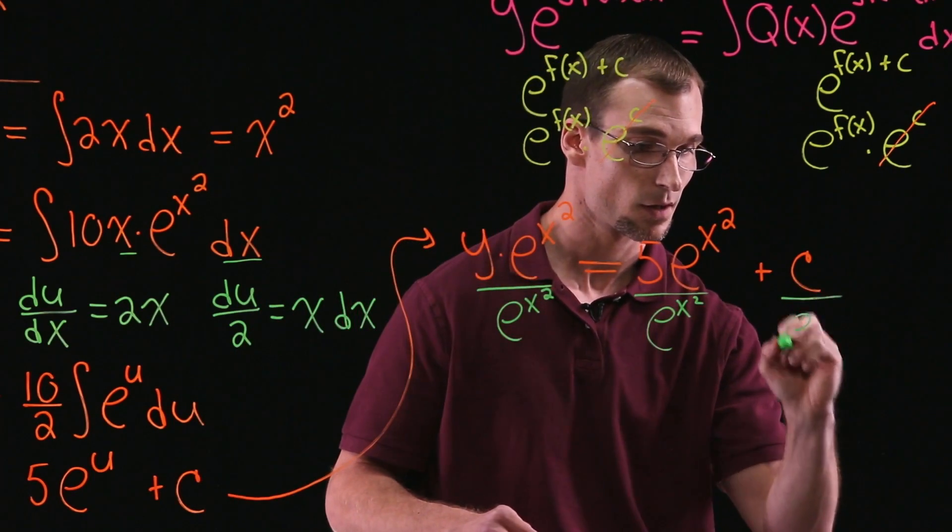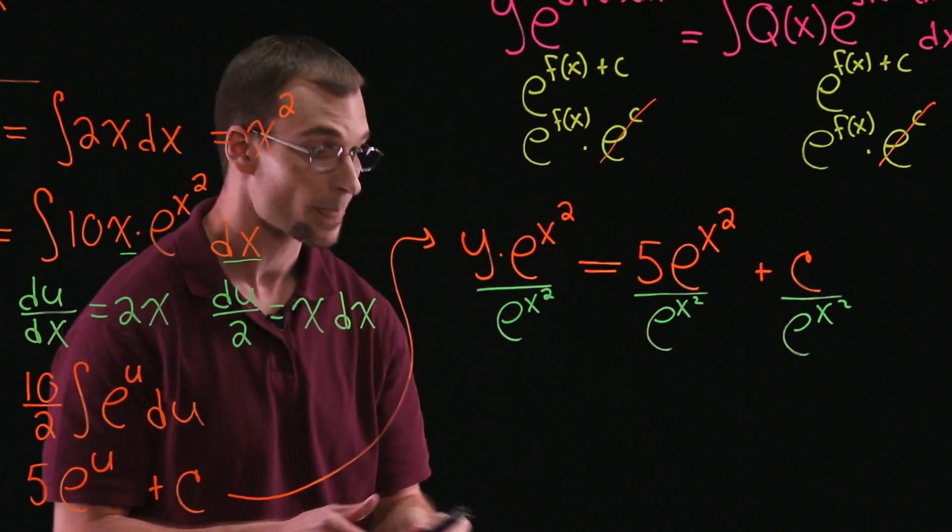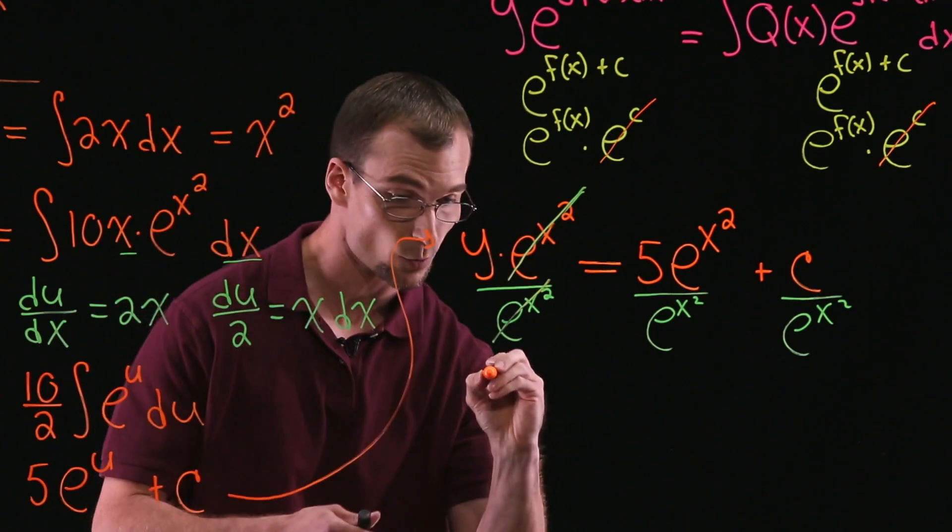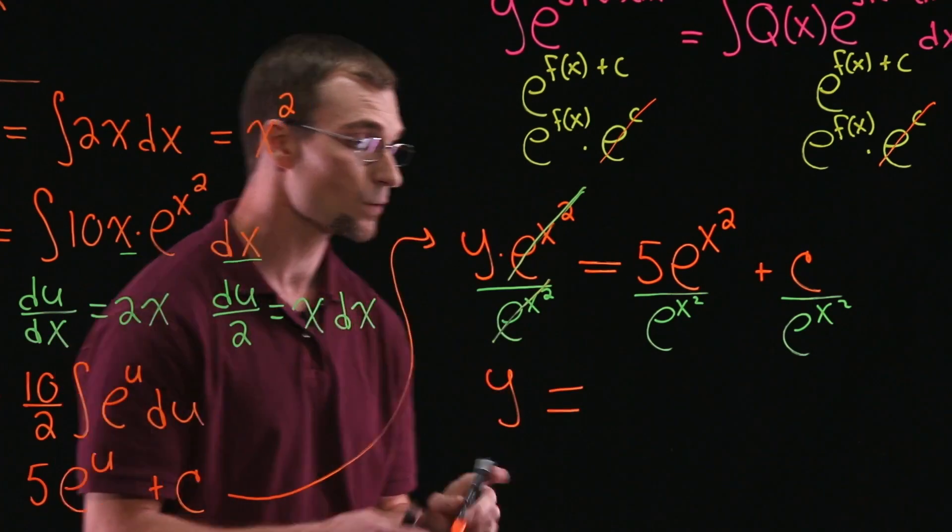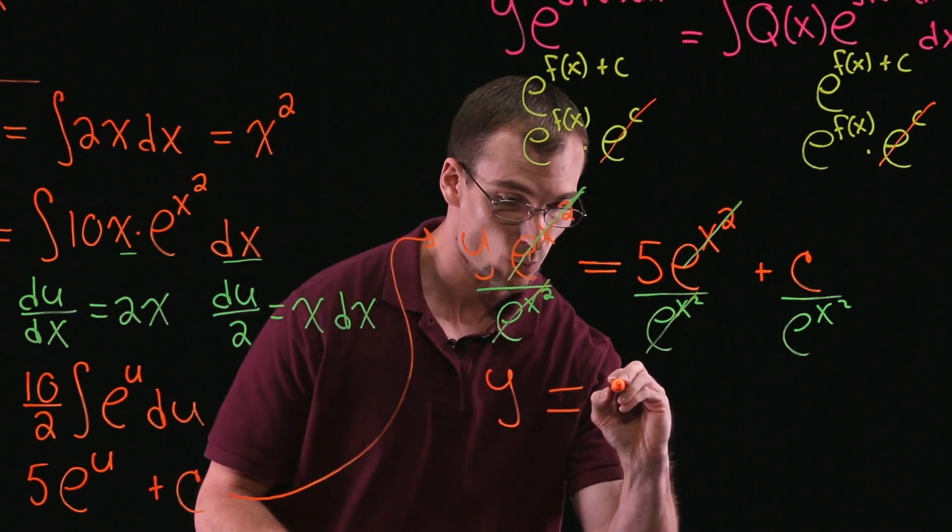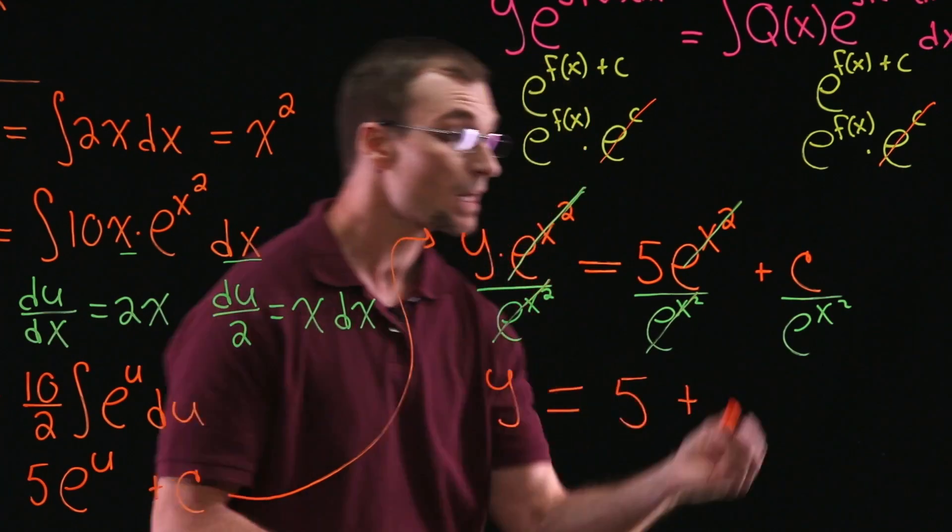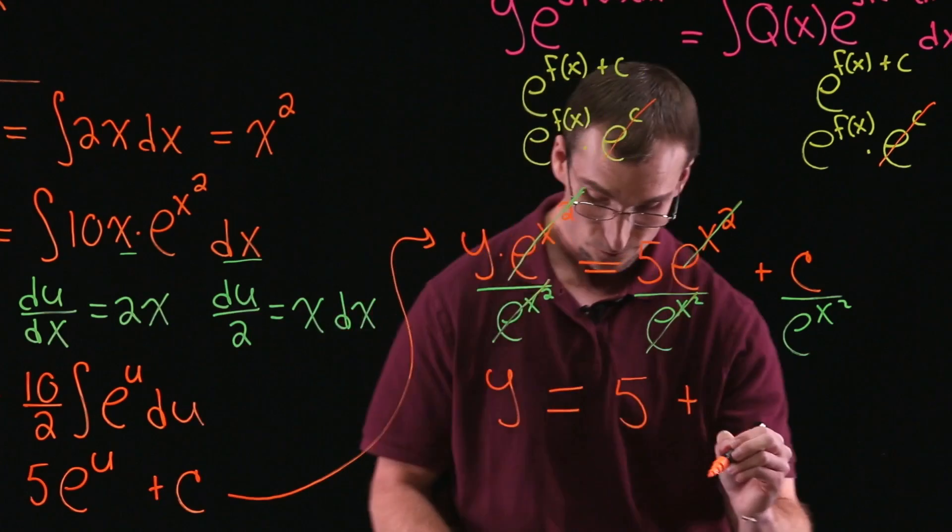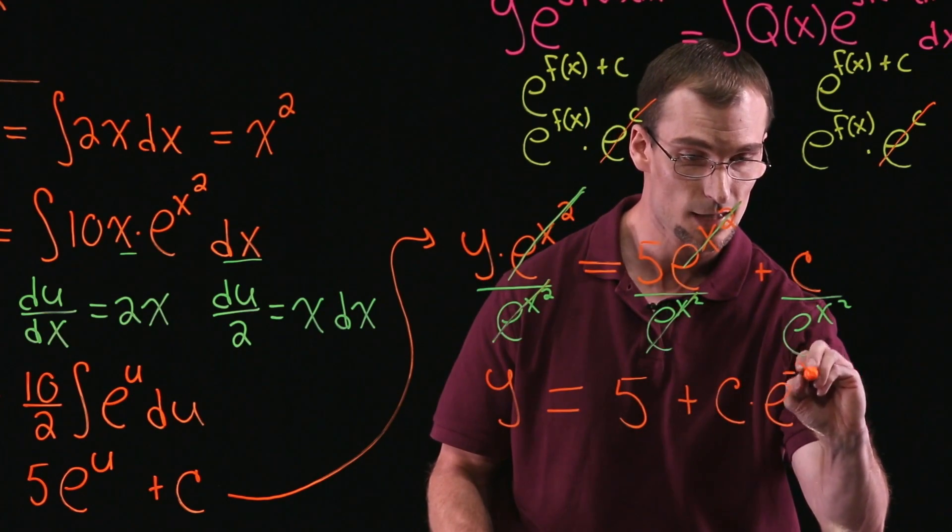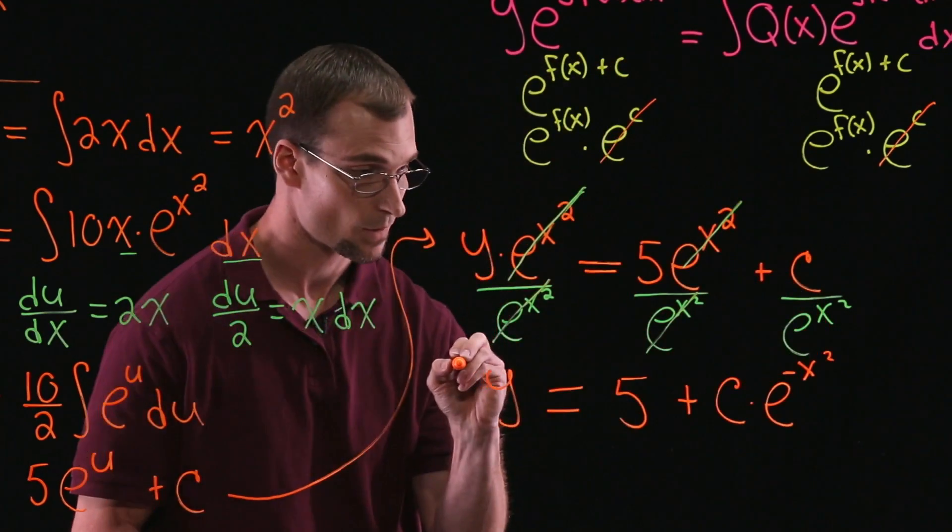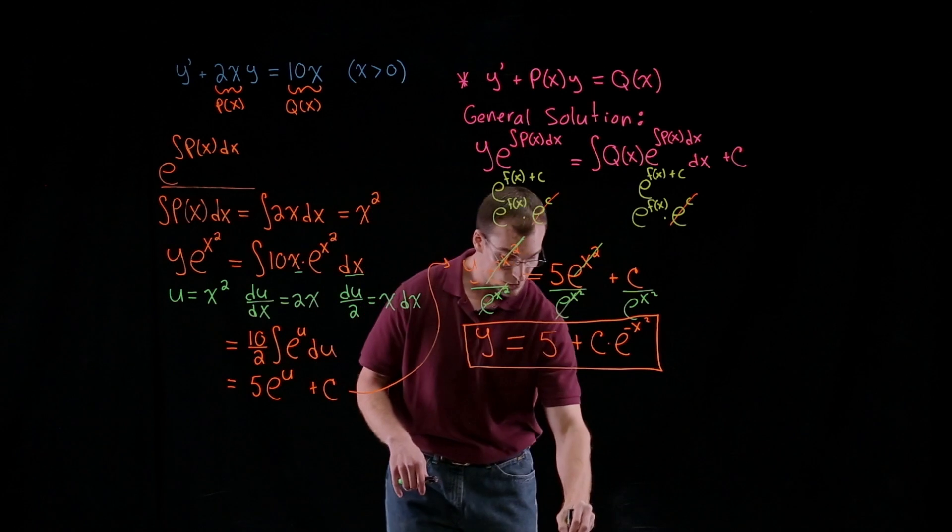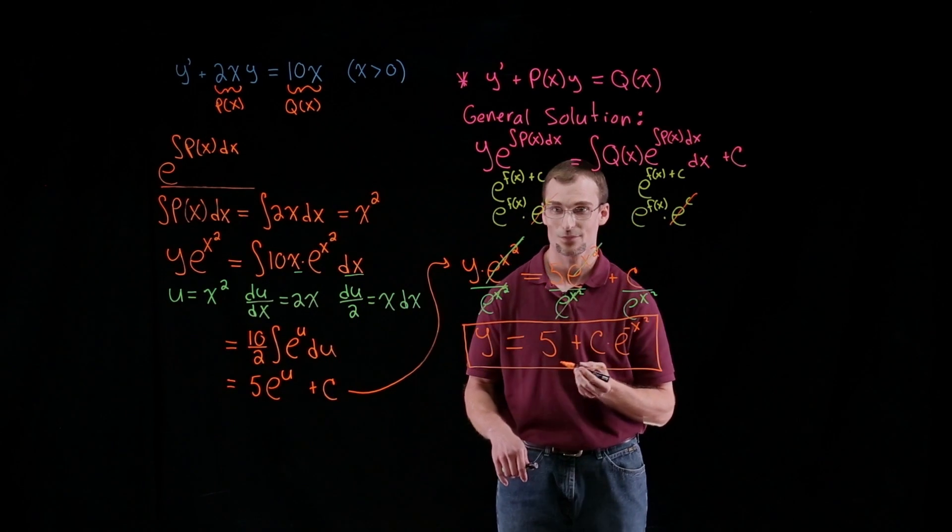So our e to the x squareds on the left, obviously, you're going to cancel. So we have y is equal to, and our e to the x squareds will cancel on our right. So this is y equal to 5 plus c divided by e to the x squared. Or we can write it as c times e, bring it upstairs as a negative exponent, e to the negative x squared. And that is going to be the solution to our first order differential equation. Thank you very much.